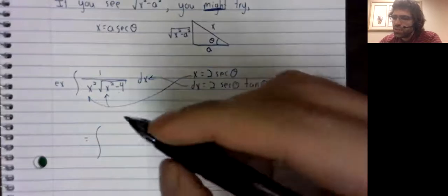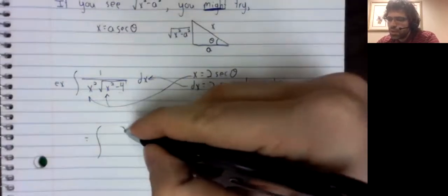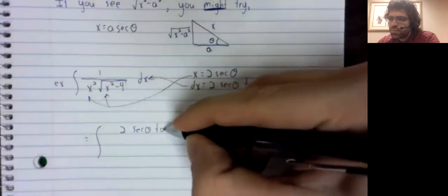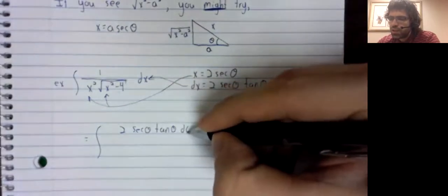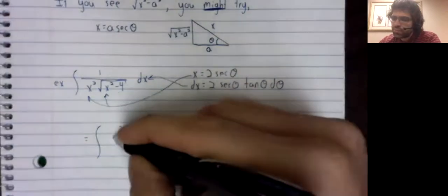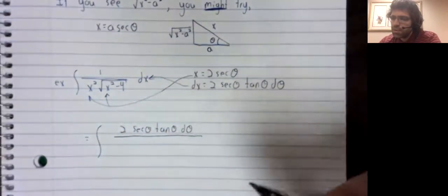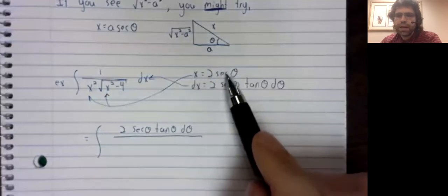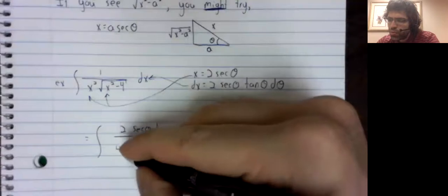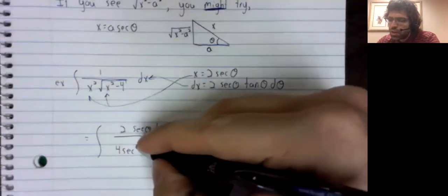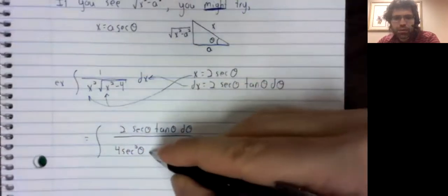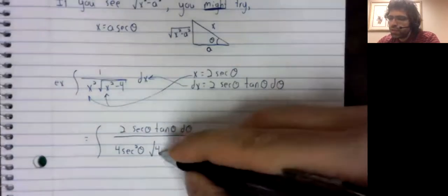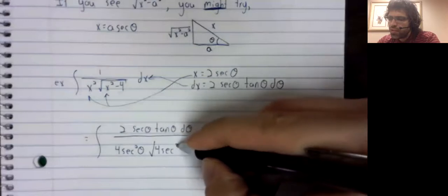So this dx goes on top, our 2 times our secant. The x squared, 2 squared, the secant squared. So 4 times the secant squared times the square root of, once again, 4 times the secant squared.